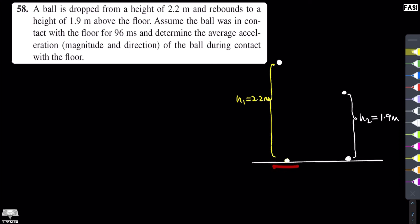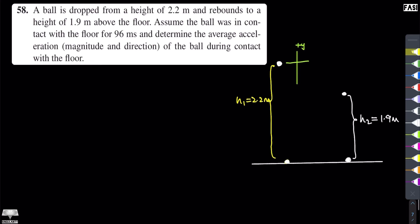We have divided the motion into two separate parts and defined a coordinate system. We define the positive Y axis as pointing upward. With respect to this coordinate system, the origin is at the drop point, so the ground level displacement is minus 2.2 meters — that is, this height is negative 2.2 meters with respect to our defined coordinate system.